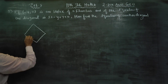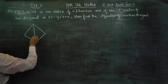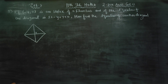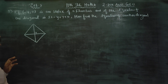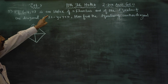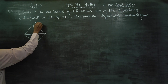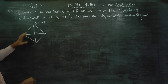Rhombus: all sides are equal and the diagonals are perpendicular. The point minus 4, 7 is one vertex of the rhombus.